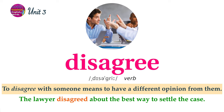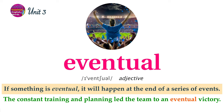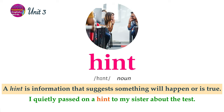To echo means that a sound repeats itself because it bounced off an object. The child yelled over the canyon and the wall echoed the sound. If something is eventual, it will happen at the end of a series of events. The constant training and planning led the team to an eventual victory. A hint is information that suggests something will happen or is true. I quietly passed on a hint to my sister about the test.